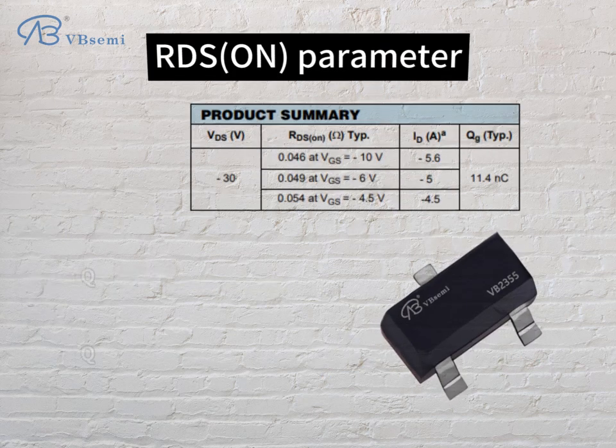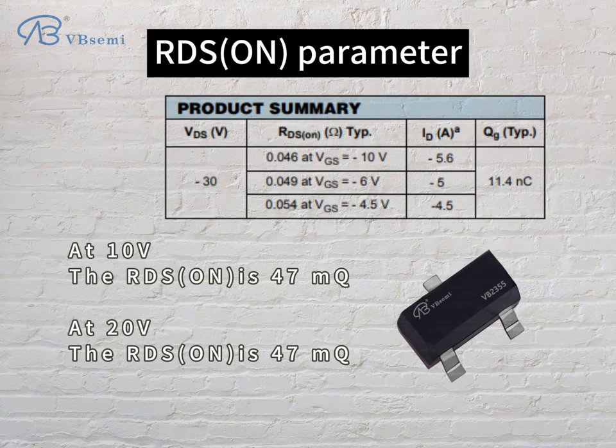RDS(on) parameter: at 10V the RDS(on) is 47mΩ; at 20V the RDS(on) is 47mΩ.